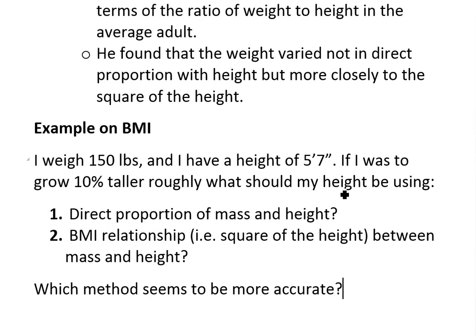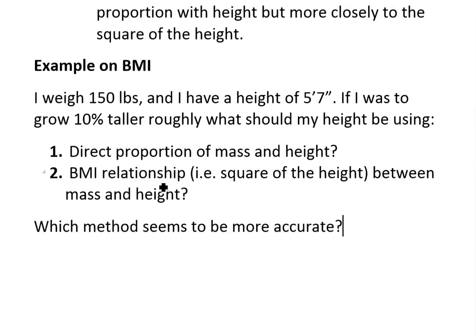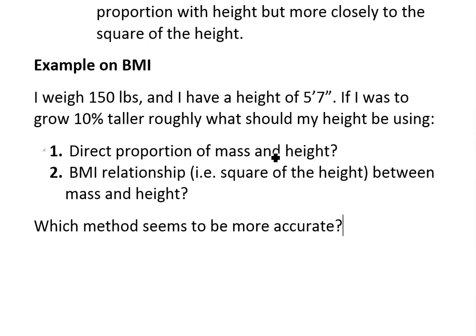If you're using, let's say, direct proportion of mass and height, or using the BMI relationship, the square of the height between mass and height. And then also, which method seems to be more accurate?